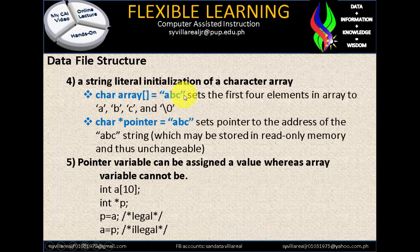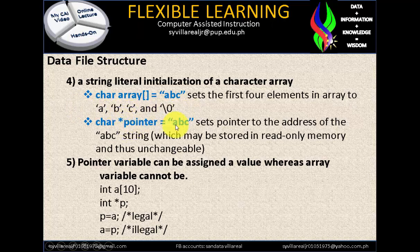Number 4, string literal initialization of character array: char array = "ABC" sets the first four elements in the array. A character uses a single quote for a single character, but if it's an array, it uses double quotes. char *pointer = "ABC" sets the pointer to the address of the ABC string, which may be stored in read-only memory and is thus unchangeable — a pointer is not changeable. Using a pointer is faster than a normal variable.